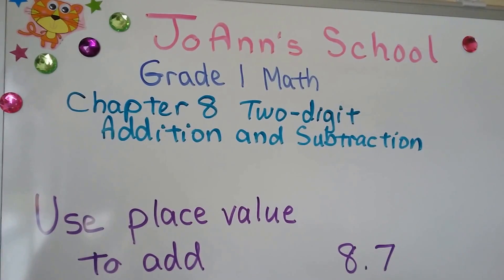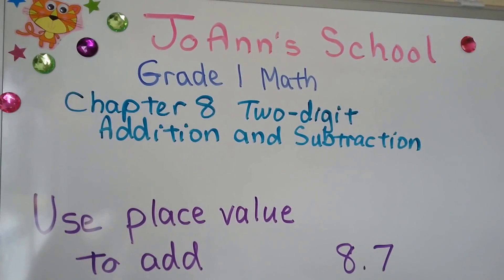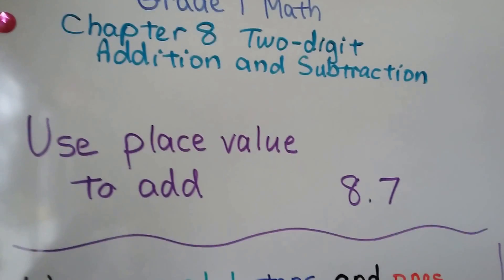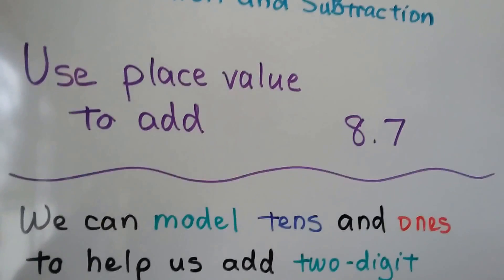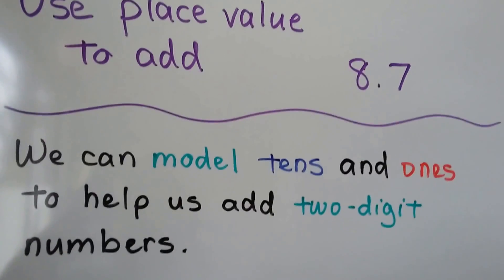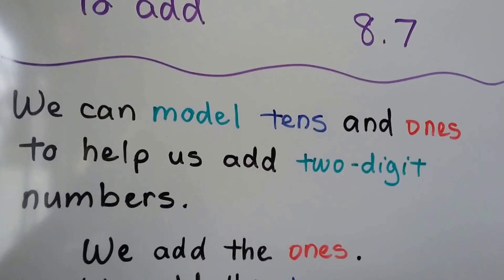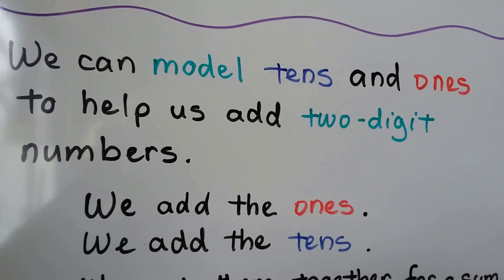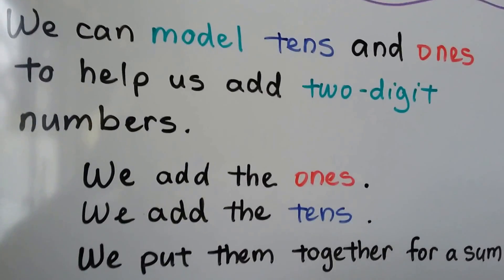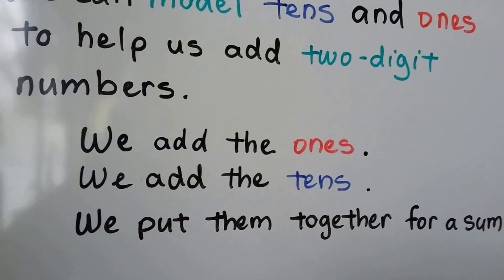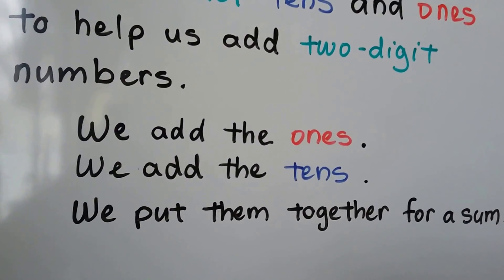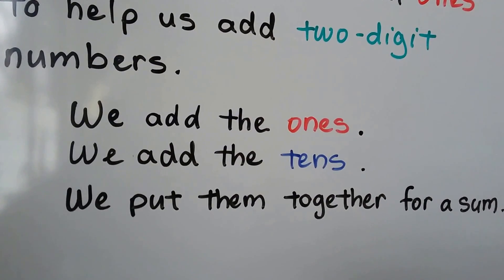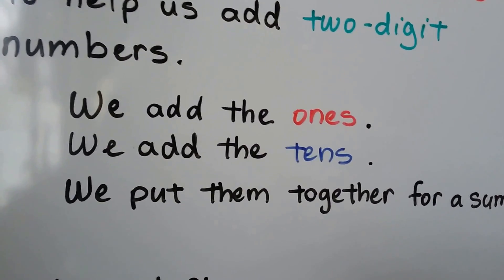Use place value to add. Lesson 8.7. We can model tens and ones to help us add two-digit numbers. We add the ones, we add the tens, we put them together for a sum.